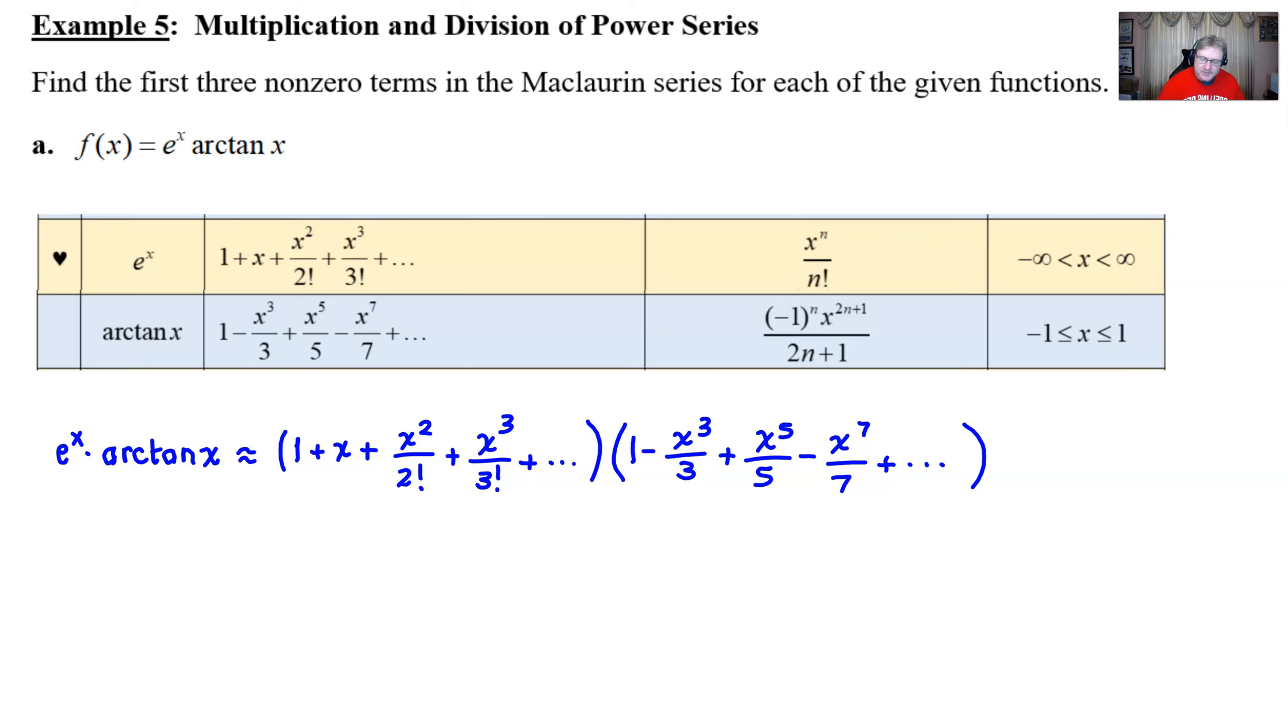Well, the key here is that you don't need to find every single term. You only need to find the first three non-zero terms. So one of the ways that I would suggest doing this is just to take your very first value in your e to the x expression one and start the process. Multiply him by the first term in the second expression. And it's a pretty ironclad guarantee that one is likely going to be one of those first three non-zero terms.